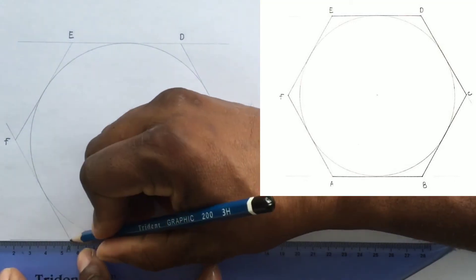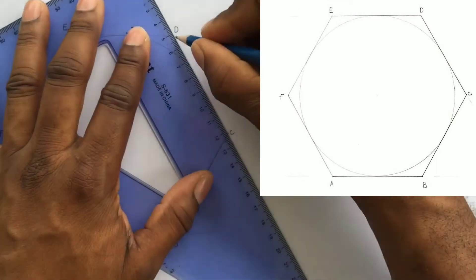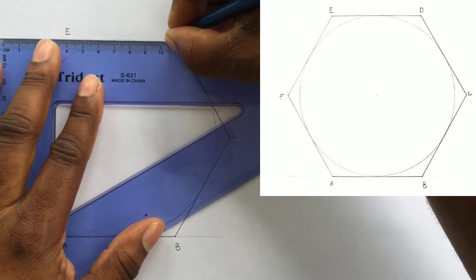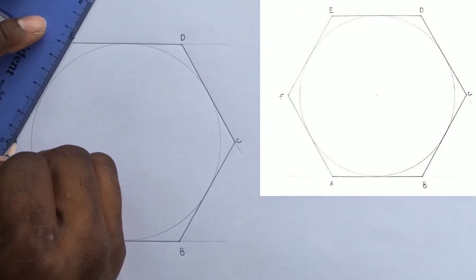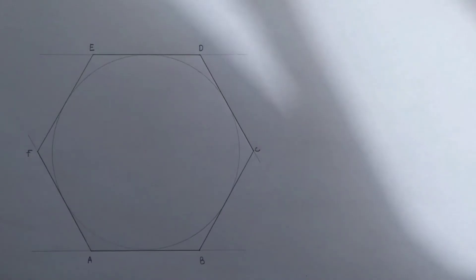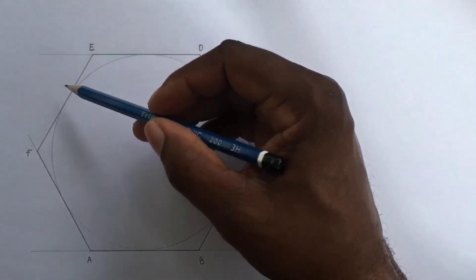We will now outline our required hexagon. We have just constructed our regular hexagon A, B, C, D, E, F.